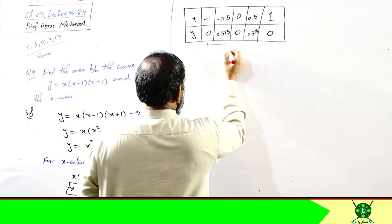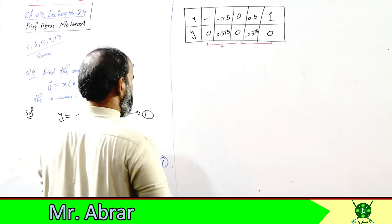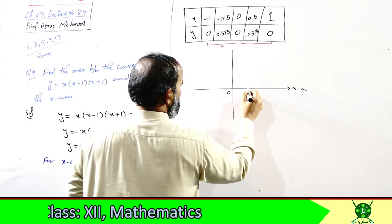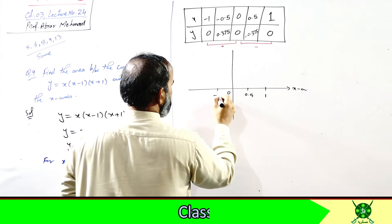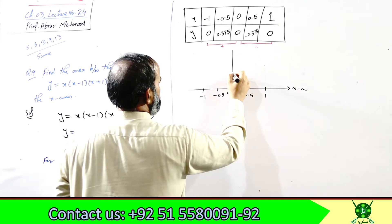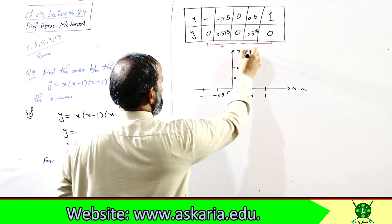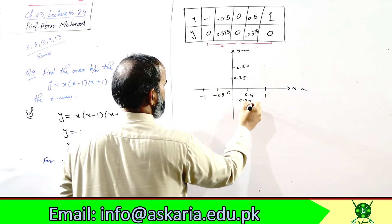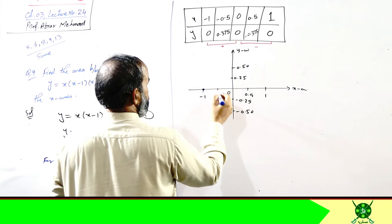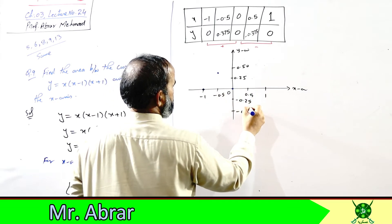And between 0 and 1, using x = 0.5, the result is −0.375. So between the two zeros −1 and 0, the function is positive (above x-axis), and between 0 and 1 it is negative (below x-axis).